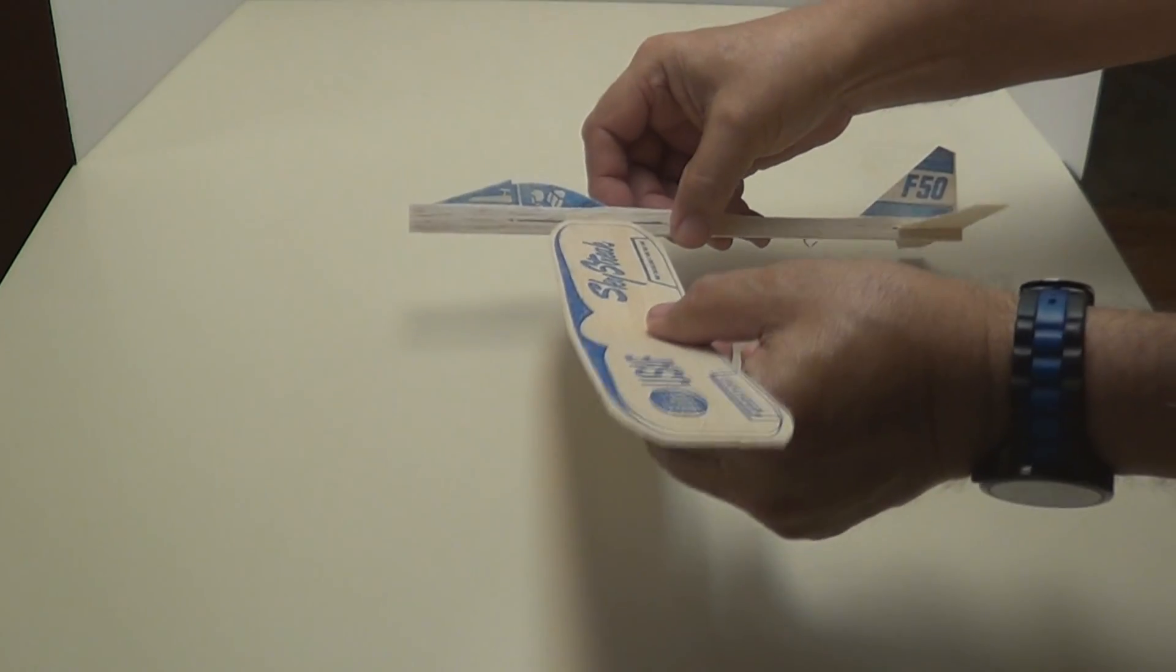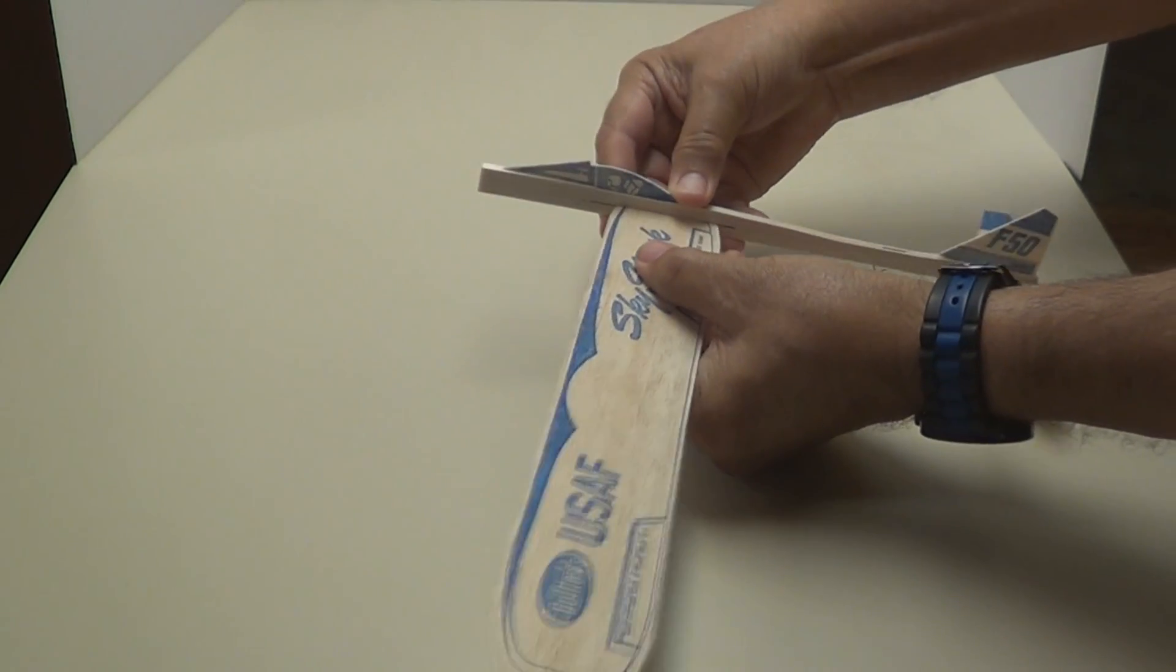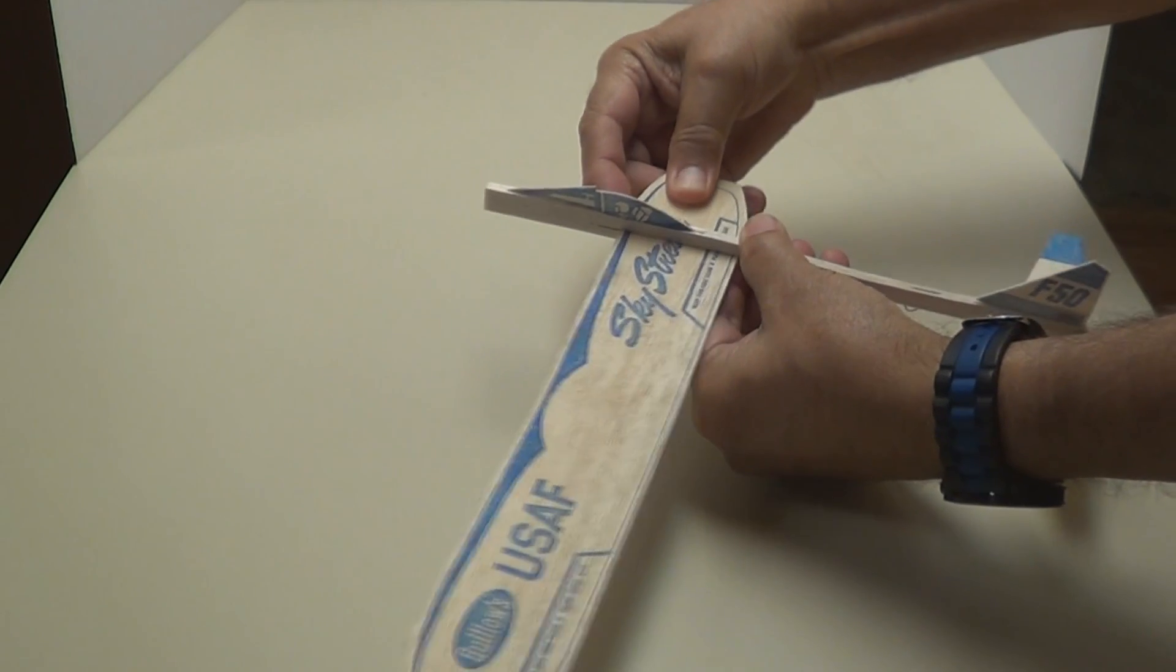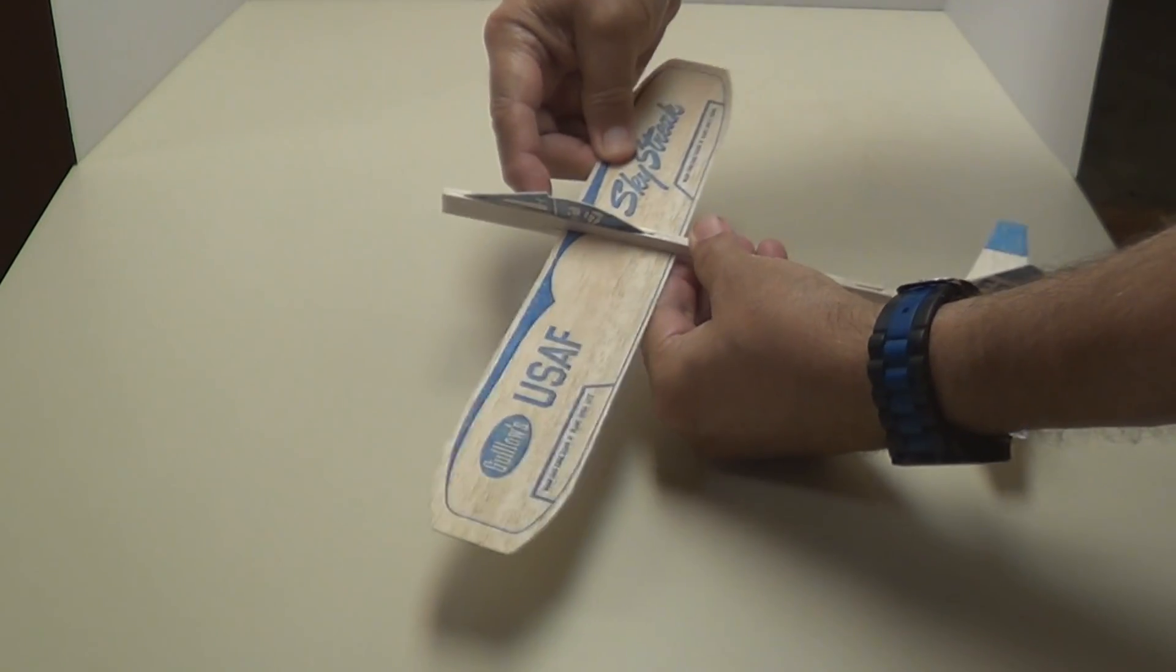And now your wing. Your wing slides into the slot on the side just like this. Be careful you don't break it, it's very fragile. Slip it right through, get it right in the middle, slide it on in.